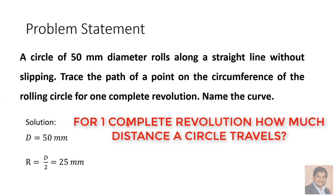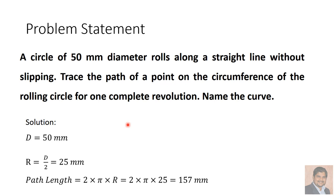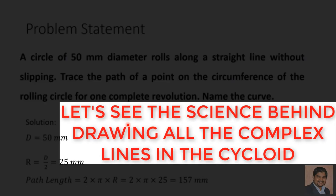For one complete revolution, the circle will travel a distance equal to its circumference, that is 2πr, so the path length will be 157 mm. First I want to show the theory behind how we are drawing the cycloid, then we will construct it.